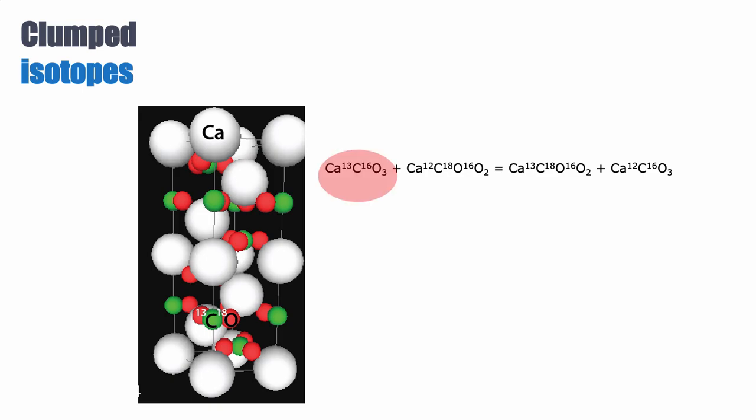One has a calcium attached to a C13 and 3 O16. The other one on the left side has a calcium attached to a C12, an O18, and 2 O16. And this is equivalent to this other potential distribution of isotopes within the isotopologues, which comprise one carbonate containing a calcium attached to a C13, an O18, and 2 O16, and a calcium attached to a C12 and 3 O16.